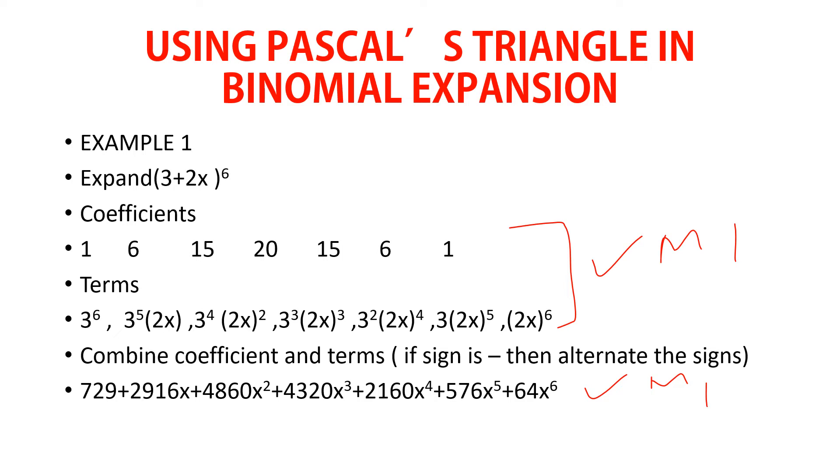So I have written the terms, separating each with a comma. You can see 3 raised to power 6. The next term is 3 raised to power 5, then multiplied by 2x. 2x is in brackets. Then 3 raised to power 4 multiplied by (2x)², don't forget that 2x is in brackets. Then 3³ multiplied by (2x)³, all the way. The last one is (2x)^6. I have not written a 3 because 3 there would be raised to power 0, and there is no need of writing it. There is also no need of writing power 1, just write the number.